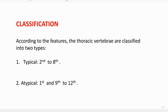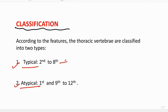Now see the classification of the vertebra. According to the features, the thoracic vertebra are classified under two categories: number one, typical, and number two, atypical. Typical vertebra are the second to eighth. Typical means all these vertebrae are having the same features, that's why we call them typical thoracic vertebra.